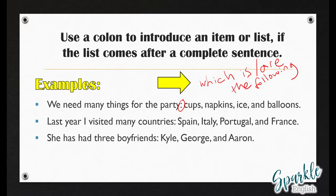The next example: 'Last year, I visited many countries: Spain, Italy, Portugal, and France.' Again, we're using a colon, and it's like saying 'which are.' The colon connects two clauses — the first is an independent clause, and the second is a dependent clause — and we use the colon to connect the two into one full sentence. Another example: 'She has had three boyfriends: Kyle, George, and Aaron.' Again, the colon is like an arrow pointing to the boyfriends mentioned in the first sentence.